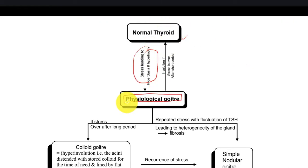The normal thyroid turns into physiological goiter when there is stress leading to hyperplasia and hypervascularity. When there is decreased iodine, it results in increased TSH.